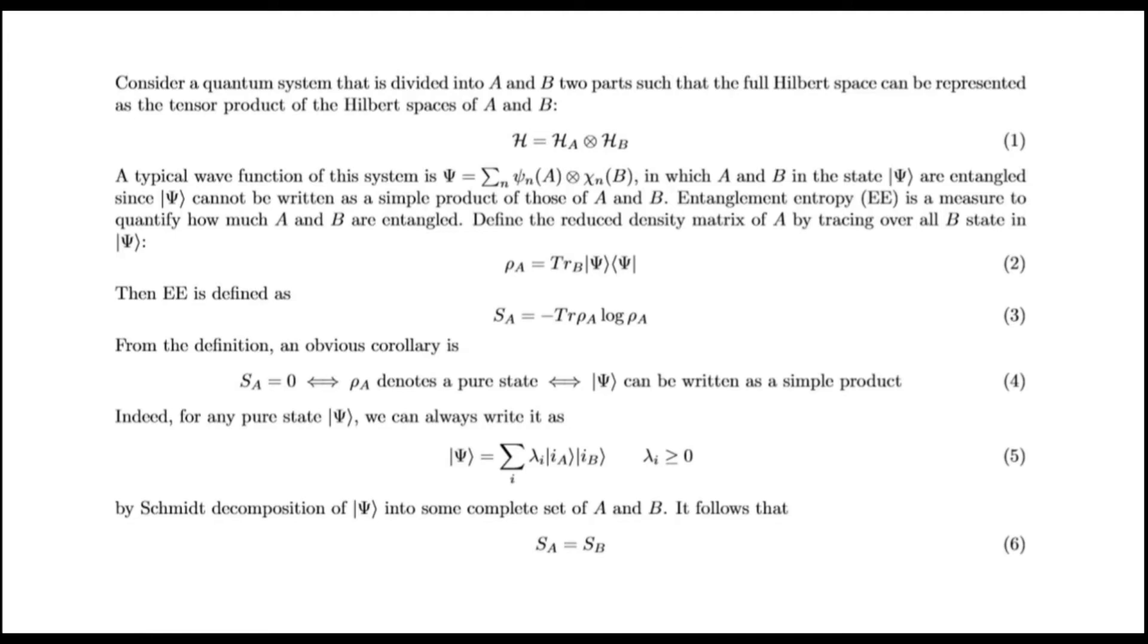Consider a quantum system that is divided into A and B, two parts such that the full Hilbert space can be represented as the tensor product of the Hilbert spaces of A and B. A typical wave function of this system is ψ. In state ψ, A and B are entangled since ψ cannot be written as a simple product of states of A and B.